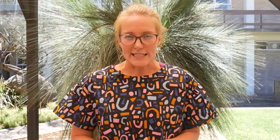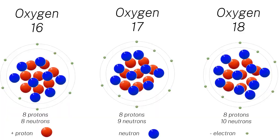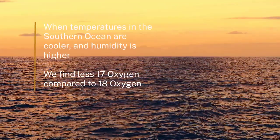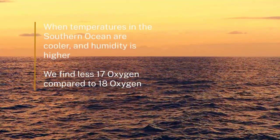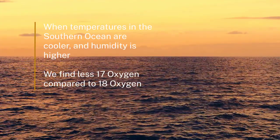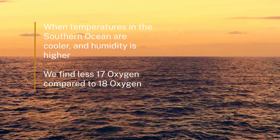The 17O excess method looks at variations in the three isotopes of oxygen: 16, 17, and 18. When temperatures in the Southern Ocean are a little bit cooler than usual and relative humidity is a little bit higher than usual, we get a little bit less 17 oxygen compared to 18 oxygen.